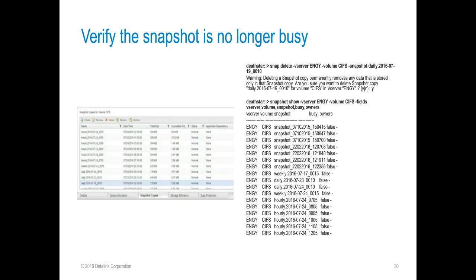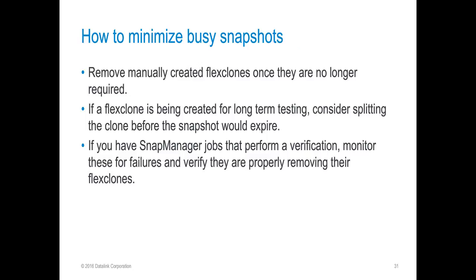So how do we minimize busy snapshots? Remove manually created flex clones once they're no longer needed. If you know a flex clone is going to be used for some long-term testing, consider splitting the clone before the snapshot would expire. If you do have SnapManager jobs running, this is one place where we see some busy v-clones where administrators aren't quite sure where they came from. SnapManager will perform verification jobs which mount the file system as a flex clone to do the verify. If these fail for whatever reason, they may not get unmounted and cleaned up properly. So monitor SnapManager for failures and make sure that the flex clones are being cleaned up — that will help remove some of those busy snapshot instances.